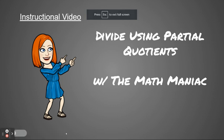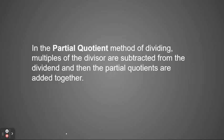Hi boys and girls, welcome back. Today we're going to be learning how to divide using partial quotients. In the partial quotients method of dividing, multiples of the divisor are subtracted from the dividend, and then the partial quotients are added together. Remember, the divisor is the number that you're dividing by, and the dividend is your total — the larger number.